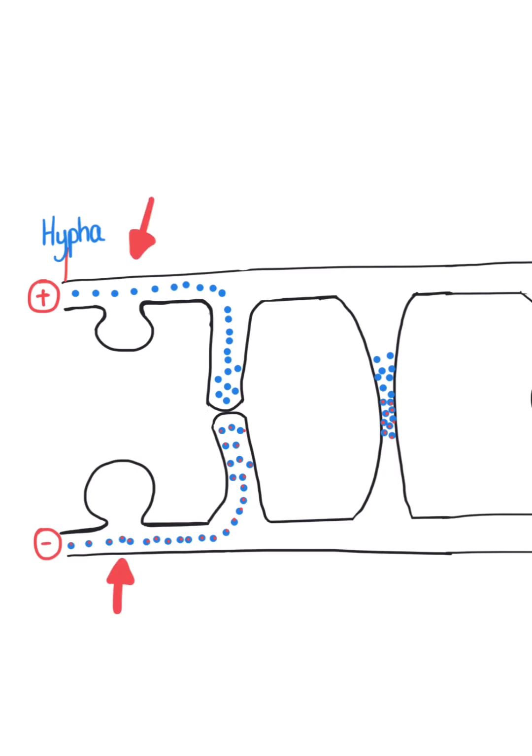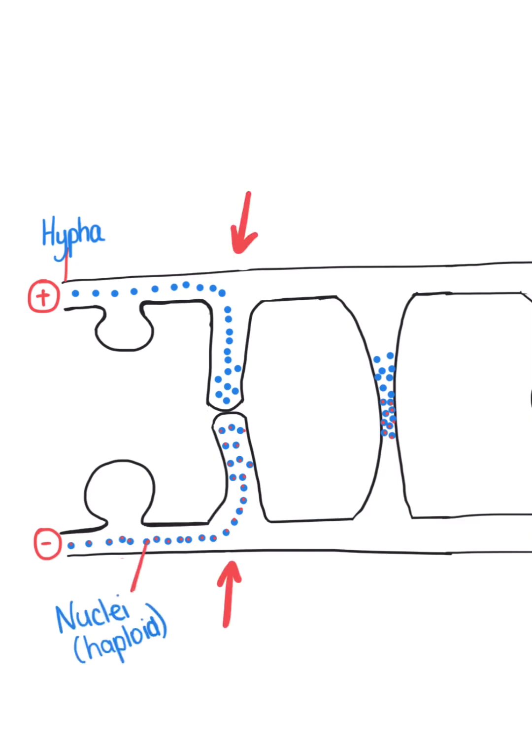Swellings form between the strains. These swellings touch the haploid nuclei inside the hyphae, which move into the swellings forming progametangia.